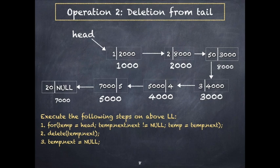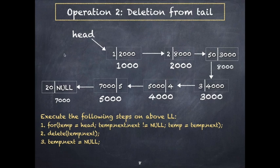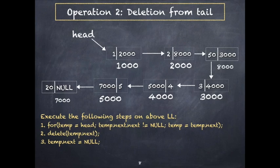Operation two is deletion from tail — deleting the last element in the linked list. To delete the last element, you need to reach that last node. Since we only have the head pointer, we must traverse to reach it. Once you reach the second-last node, you can perform the deletion.